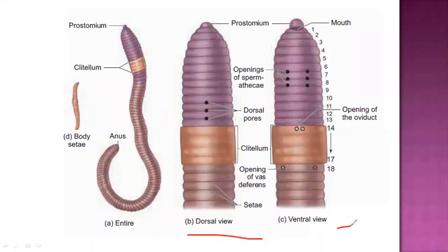The ventral view is somewhat pale when compared to the dorsal. The dorsal surface is where you can see the prostomium. There are dorsal pores on the dorsal side. On the ventral side there are openings including openings of spermathecae.